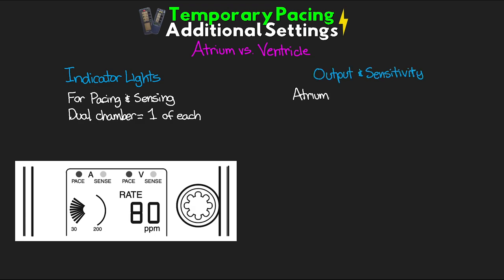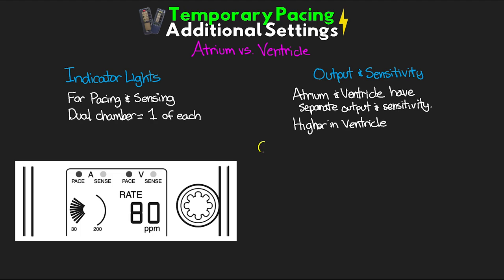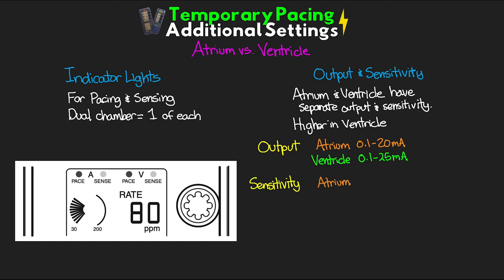The other thing I want to talk about is output and sensitivity. It's important to know that the atrium and the ventricle have separate output and sensitivity settings, and these settings are going to be higher in the ventricle. For the atrium, output ranges from 0.1 to 20 milliamps, and for the ventricle, 0.1 to 25 milliamps. For sensitivity, the atrium ranges from 0.4 to 10 millivolts, versus the ventricle at 0.8 to 20 millivolts. This makes intuitive sense because the atrium is a smaller chamber with less muscle, so we'd expect smaller output and sensitivity settings compared to the large muscle-filled ventricle.